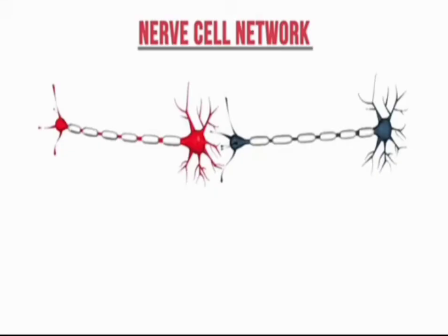After that we have the nerve cell network. The nerve cell network means how one neuron conveys a message to another neuron. We discussed at the start that neurons are the basic structural and functional unit for information processing — so we look at how information processing happens and how one neuron conveys a message to the next.